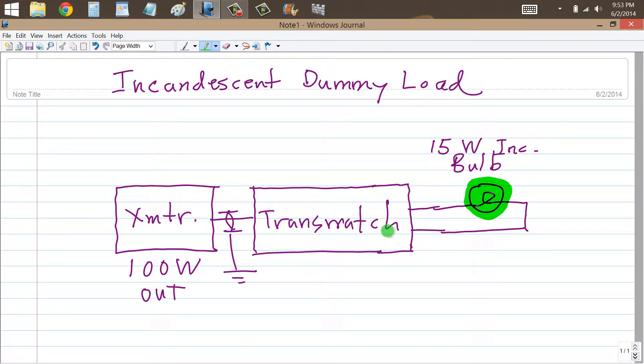Any transmatch should work. You can use either the balanced or the unbalanced output connectors. Just connect that light bulb right across there. Your coax between your transmatch and your radio, just as you normally would do. Instead of connecting your antenna feed line here, connect this bulb.